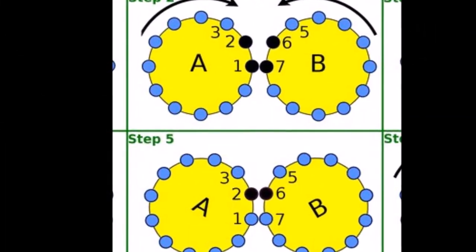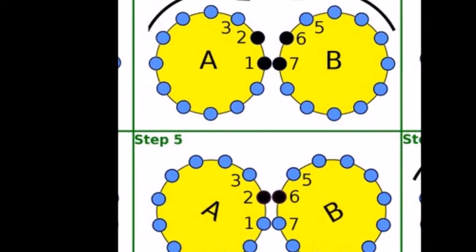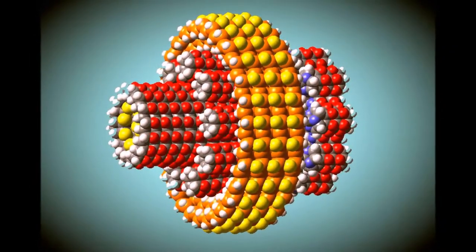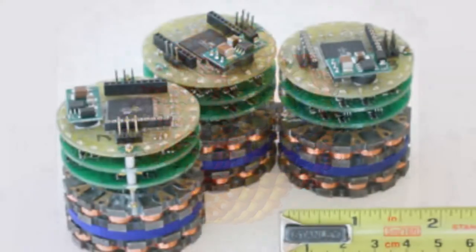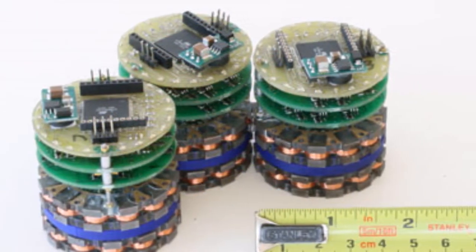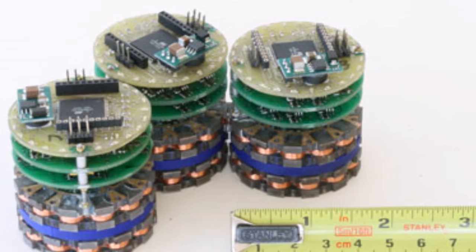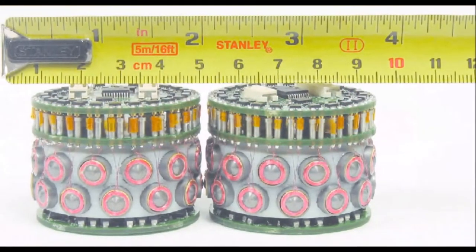Fundamentally, catoms consist of a CPU, a network device for communication, a single pixel display, several sensors, an onboard battery, and a means to adhere to one another. The researchers at Carnegie Mellon University have developed various prototypes of catoms.